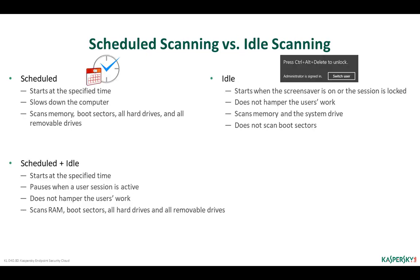We recommend scheduling virus scanning to run once a week or every two weeks. Scheduled scanning checks the whole computer, including memory and boot sectors, which helps detect rootkits. Scheduled scanning starts at the specified day and time and slows down the computer to some extent — select a time when employees do not work or are not performing resource-consuming operations. If it is hard to select a comfortable time, you can use idle scanning. Idle scanning starts when the user locks the session; once the user is back, scanning pauses and resumes at every opportunity.